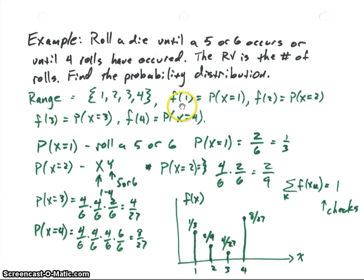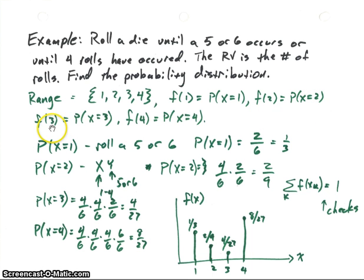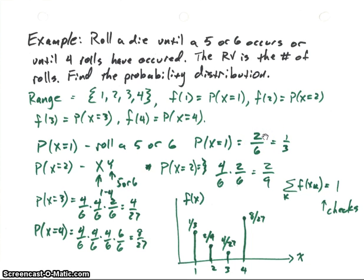The probability distribution function f is defined for each range value. f(1) equals the probability that x equals 1, meaning we get a 5 or 6 on the very first roll. Since there are two favorable outcomes each with probability 1/6, the probability is 2/6, which equals 1/3.